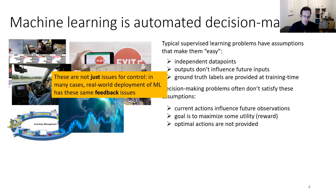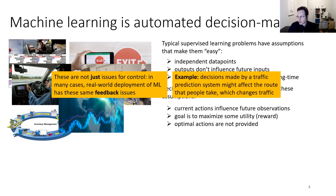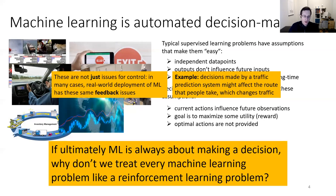These aren't just issues in control — real-world deployment of ML systems has the same feedback issues. For example, a supervised learning system predicting traffic patterns as part of a navigation app will affect the routes people take, which changes the traffic. So unbeknownst to the ML system, it is making decisions and its inputs and outputs are not independent. If ultimately ML is always about making a decision, why don't we treat every ML problem like a reinforcement learning problem?